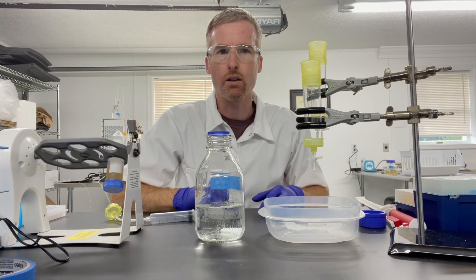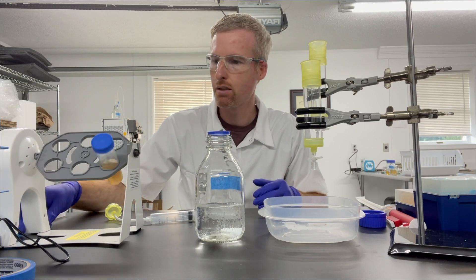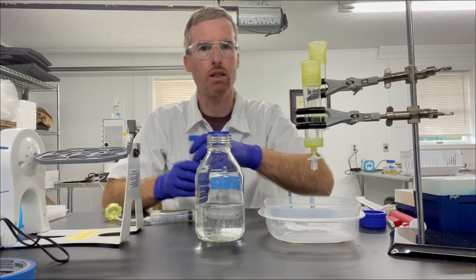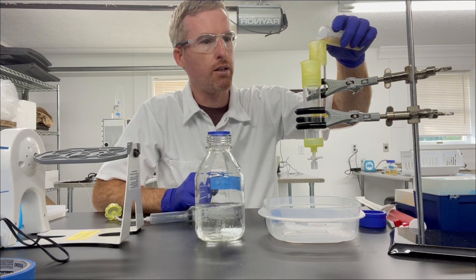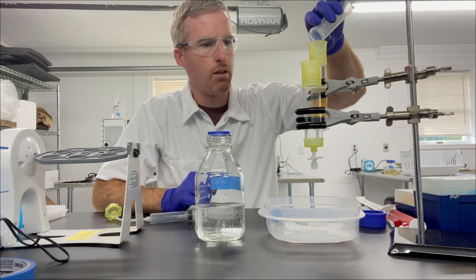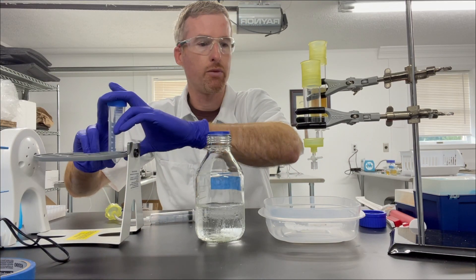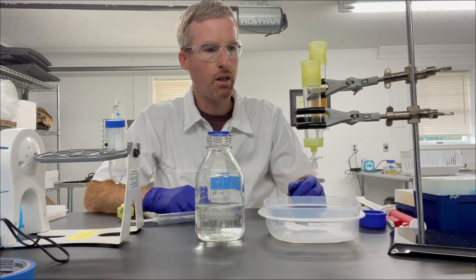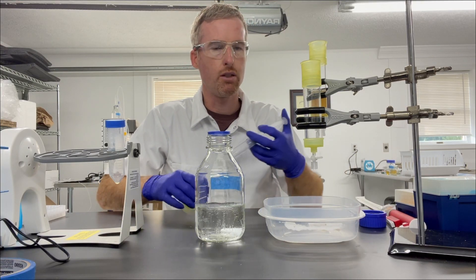Okay, so our lysate and nickel agarose have been mixing for about 15 minutes, and the his-tagged proteins should be bound to the nickel agarose at this point. So I'm going to take it out, and I'm going to pour it into a Bio-Rad Econo column. So this is a gravity column, but we're not going to be using gravity, which I'll show you in a minute. These are really great for purifying proteins, and I actually have two of them here. I'm going to purify two proteins in parallel.